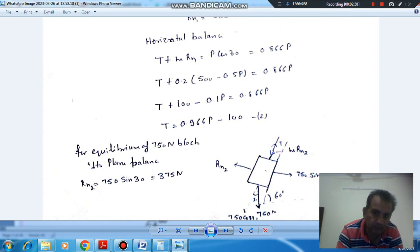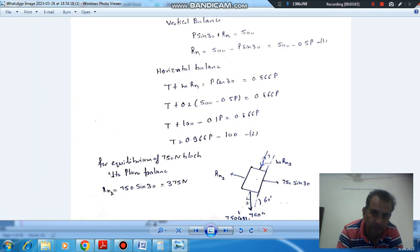So now, balancing forces along the perpendicular to plane, so R_N2 will be equal to 750 sin 30 that is 375N.